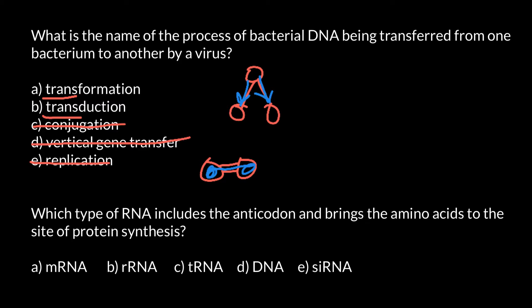For transduction, the second part of the word reminds me of 'duck.' A duck is a bird, and birds can get viral diseases like bird flu. For the word transformation, it reminds me of robot transformers, and robots cannot get viral diseases. So this helps you remember which one involves a virus.